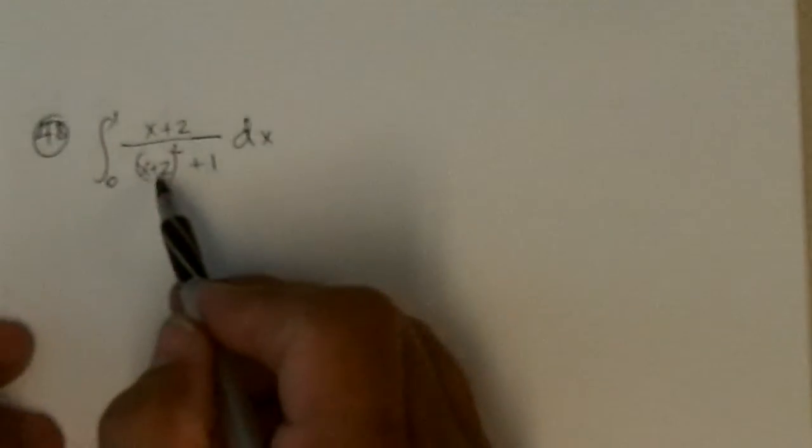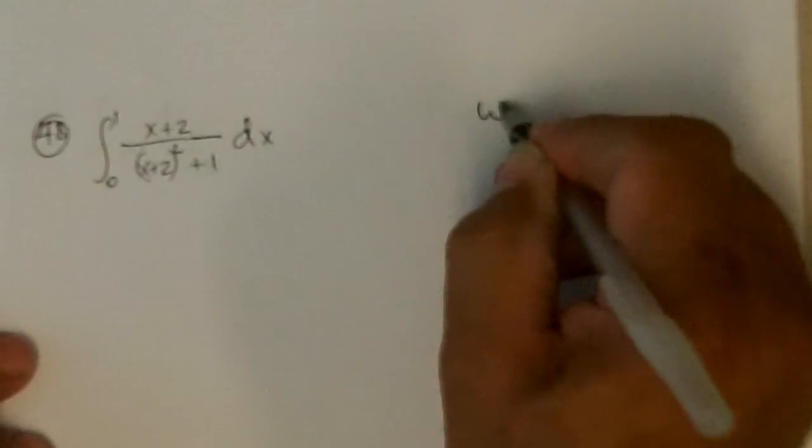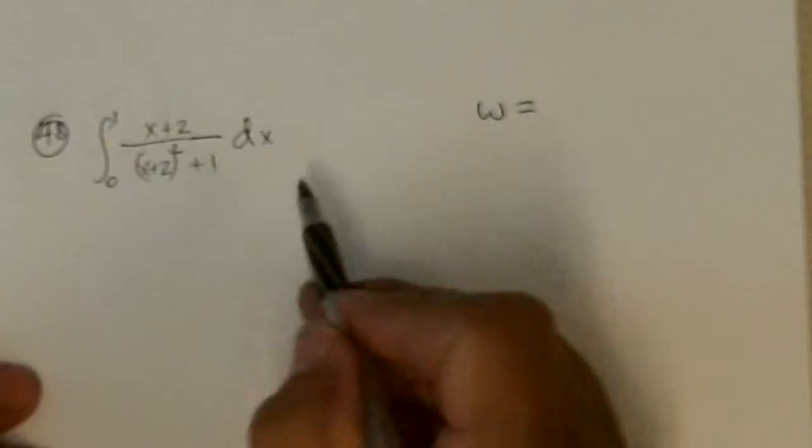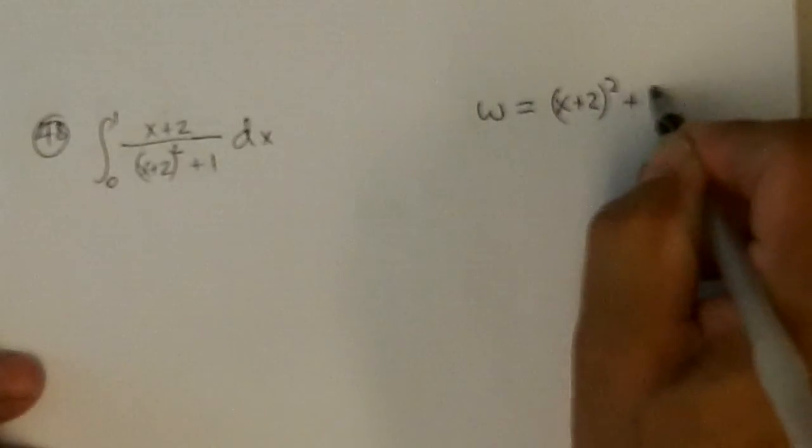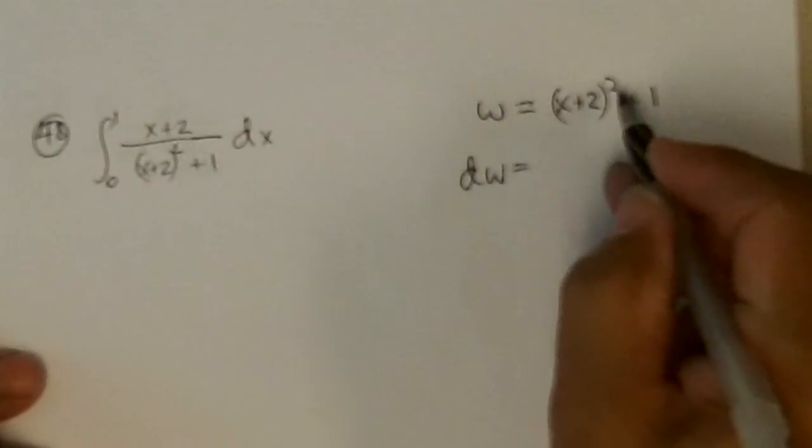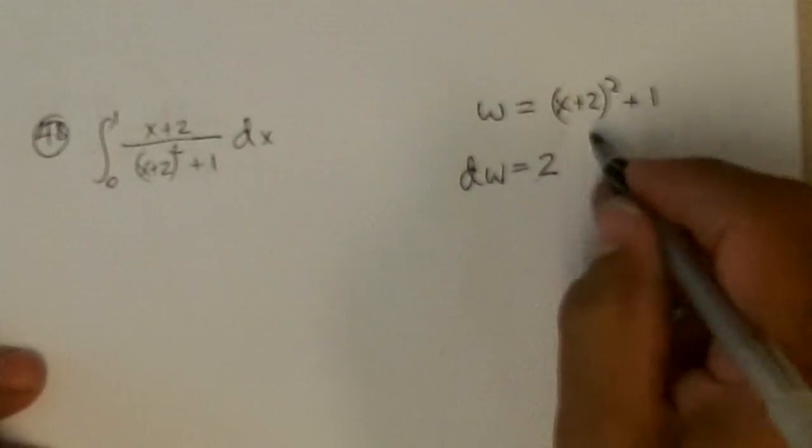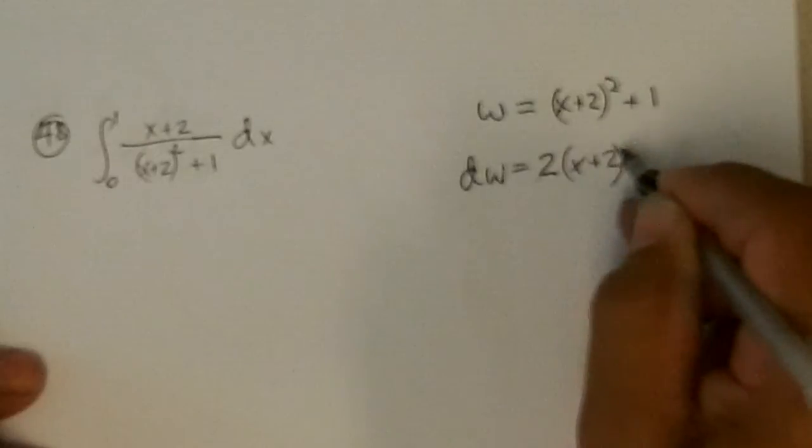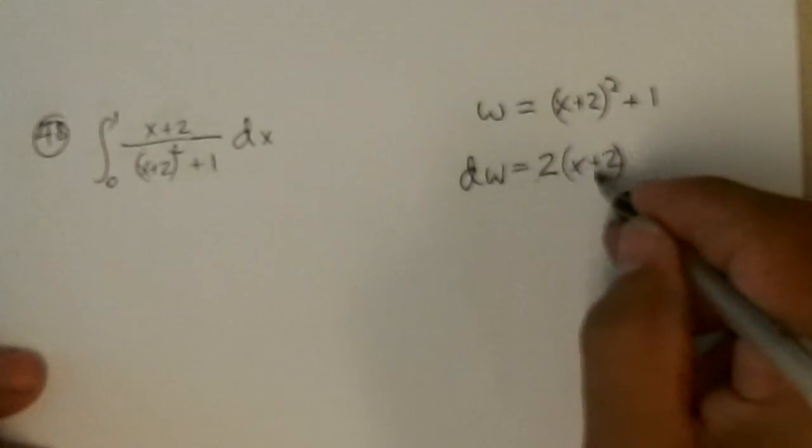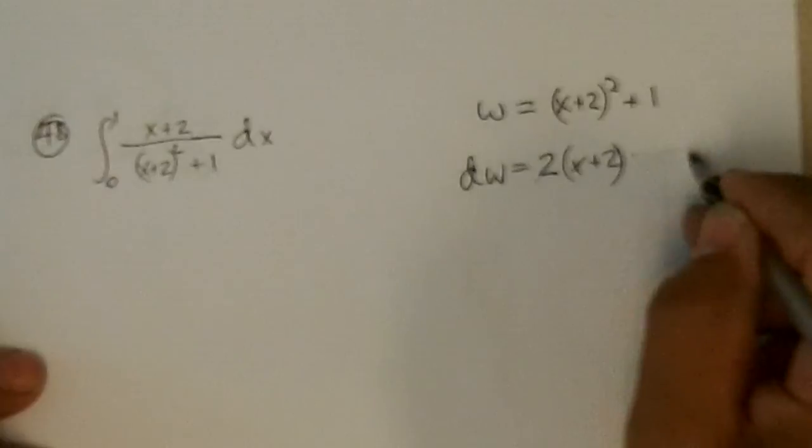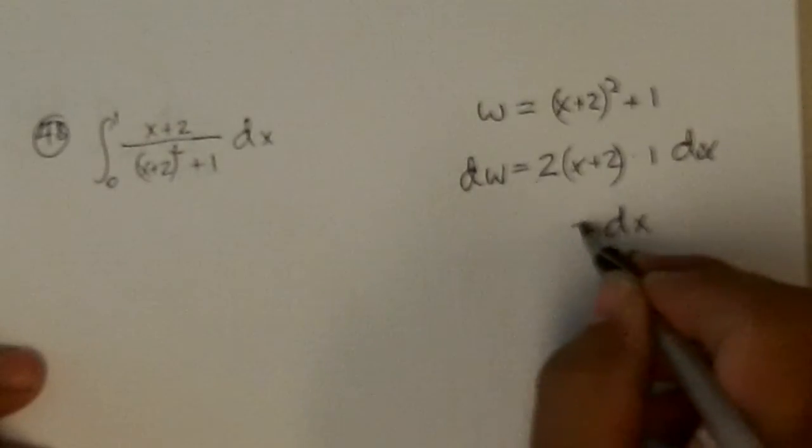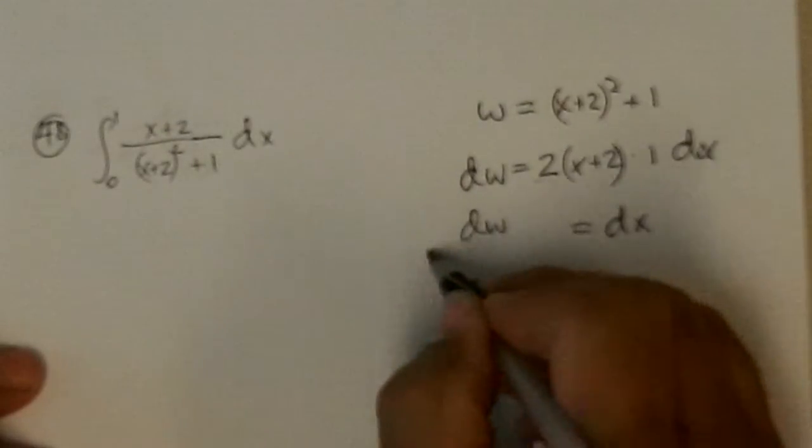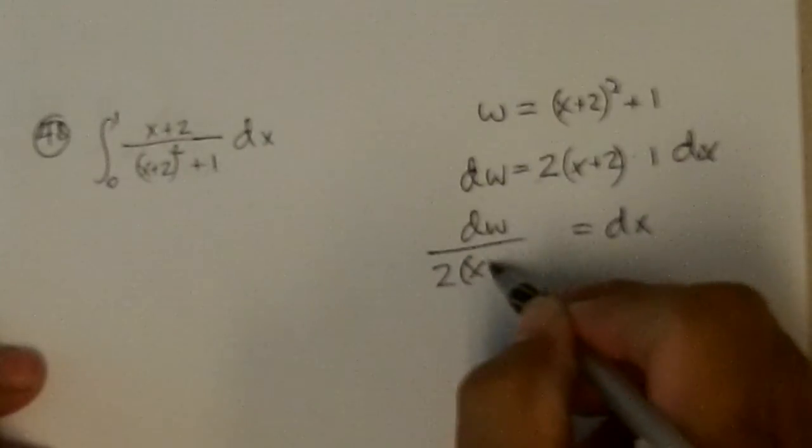And this one, I think if I let w, don't need the table for this, equal to (x+2) quantity squared plus 1, dw would equal 2 times (x+2) to the 1 times the derivative of the inside, x plus 2 is 1, dx. So I get dx equals dw over 2(x+2).